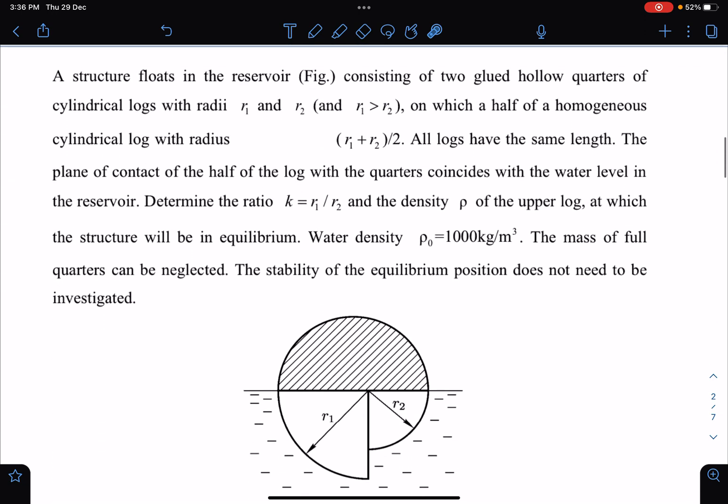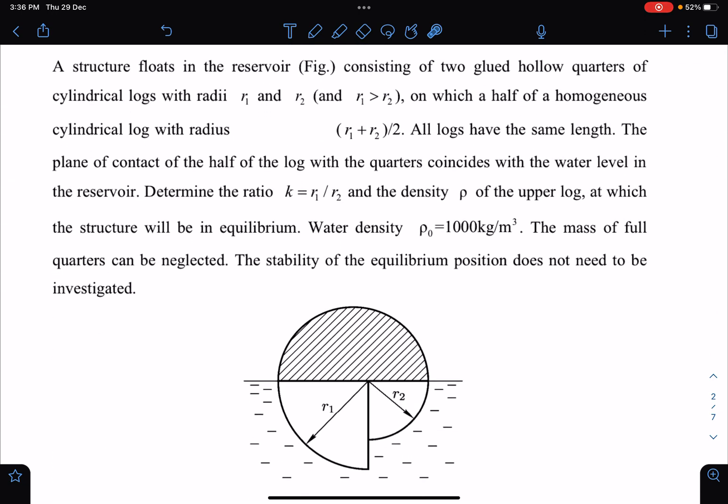Here is the problem statement. A structure floats in a reservoir, figure is given, consisting of two glued hollow quarters of cylindrical logs with radius r1 and r2, on which a half of homogeneous cylinder of radius (r1 + r2)/2 is placed. All logs have the same length.